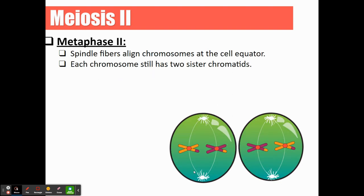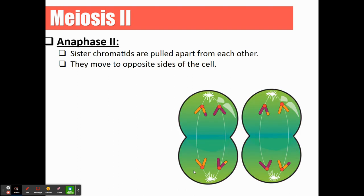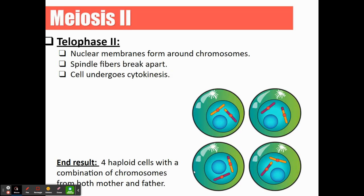In metaphase two, the spindle fibers align chromosomes at the cell equator or equatorial plate. Each chromosome still has the two sister chromatids that we started with. In anaphase two, those sister chromatids are going to be pulled apart and move to opposite sides of the cell. In telophase two, the nuclear membrane is going to return and form around those chromosomes to protect them, the spindle fibers disassemble, and then the cell undergoes cytokinesis. The end result of meiosis two is four haploid cells with a combination of chromosomes from both mother and father.